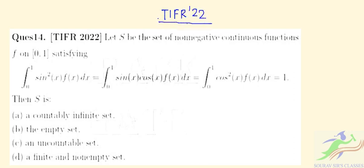Question number 14 says: let S be a set of non-negative continuous functions f on [0,1] satisfying the conditions that ∫₀¹ sin²(x) f(x) dx = ∫₀¹ sin(x)cos(x) f(x) dx = ∫₀¹ cos²(x) f(x) dx = 1. We have to determine what the set S is.